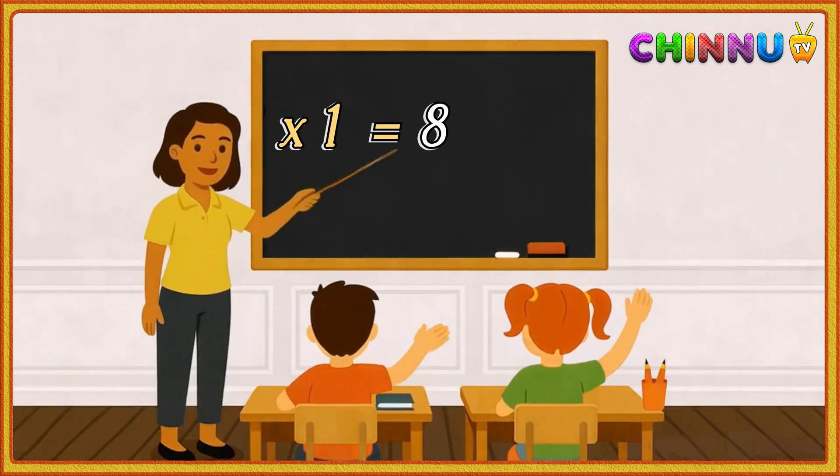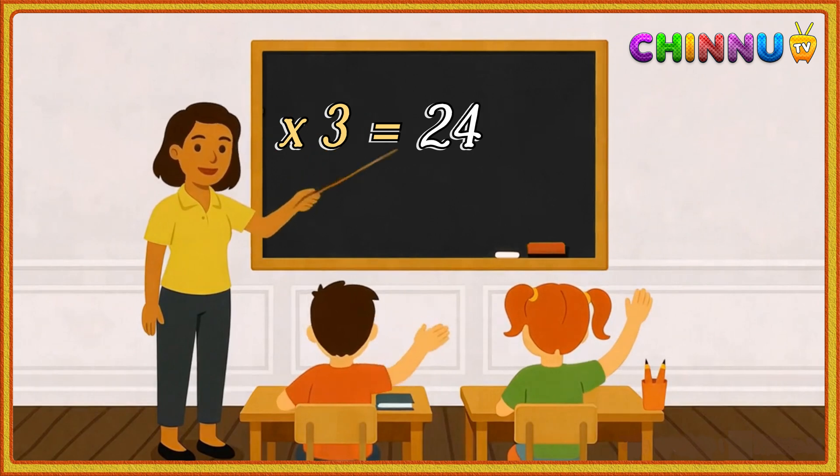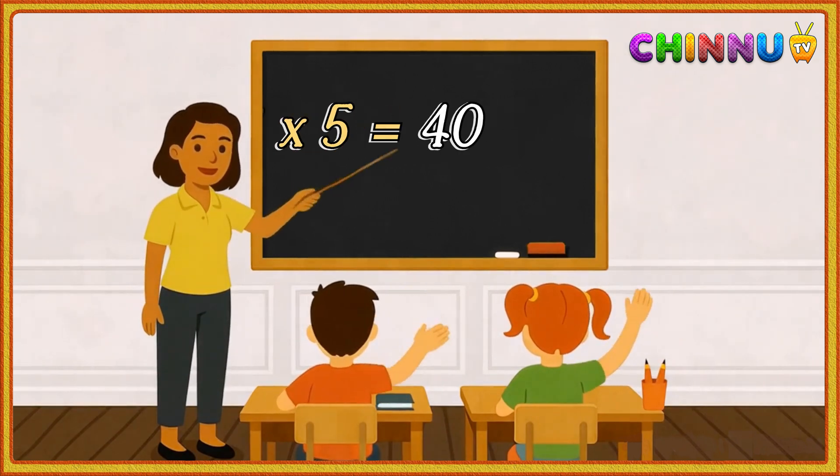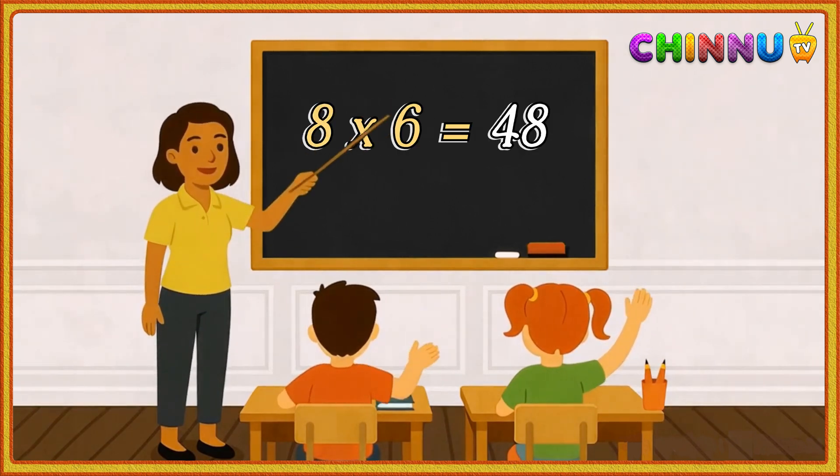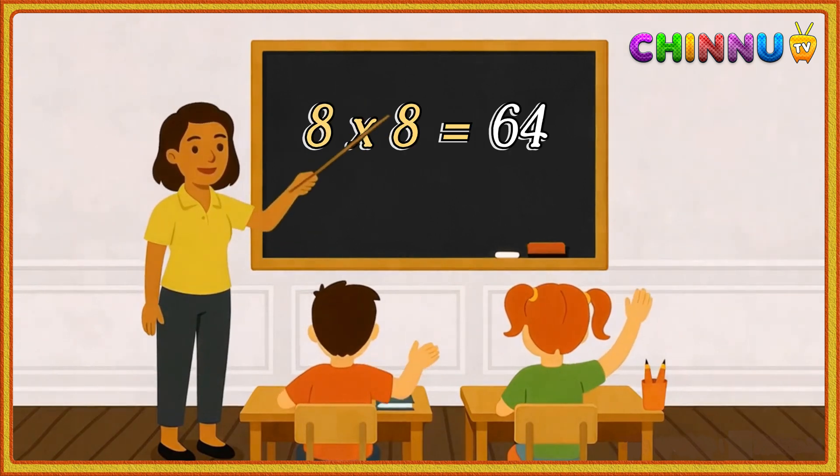are eight. Eight twos are sixteen. Eight threes are twenty-four. Eight fours are thirty-two. Eight fives are forty. Eight sixes are forty-eight. Eight sevens are fifty-six. Eight eights are sixty-four.